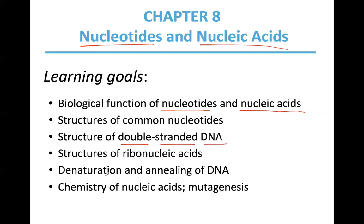We'll talk about denaturation, just like with proteins — so if you have two strands together, you can denature DNA and separate the two strands. This is a very important process not only in the lab, but also when the genetic machinery reads the genetic code. You have to separate the DNA strands so the genetic material can be read, DNA can be replicated, or new proteins can be synthesized. We'll also talk about the chemistry of nucleic acids and what happens if you introduce mutations into genes.